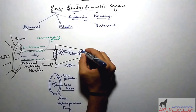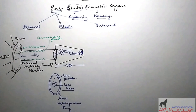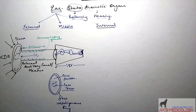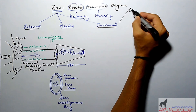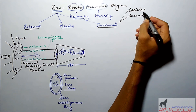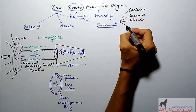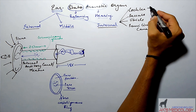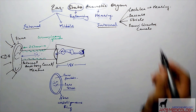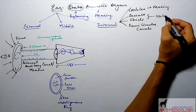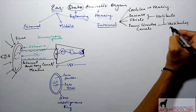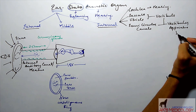The foot plate of the stapes is in close contact with the oval window, which is the window of the internal ear. The internal ear is a spiral or tortuous organ. It consists of four parts: the cochlea, the saccule, the utricle, and the semicircular canals. The cochlea is the main organ for hearing. The saccule and utricle together are known as the vestibule, and vestibule along with the semicircular canals form the vestibular apparatus, whose function is balancing.